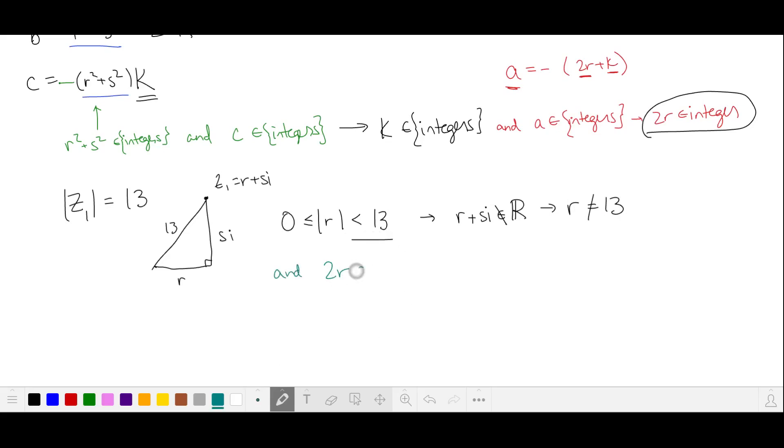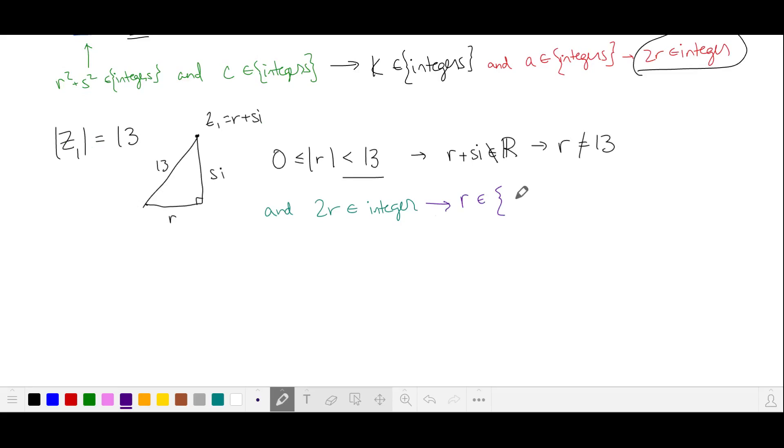And again, we want 2r to be an integer. So r is going to be in the set of fractions that have a 2 in the denominator. And our largest number is 25 over 2. So the number of values in this set, we have 1 for our 0. And then here we have 25 fractions from 1 half to 25 halves, and then times 2 because of the plus or minus. This gives us 51 values for r.